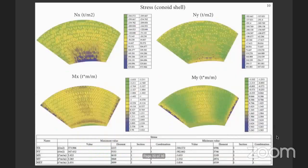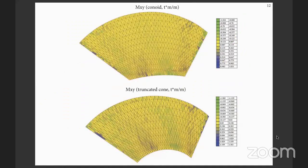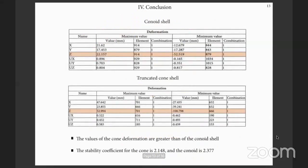Here are the values of the conoid shell, and these are the values for the truncated cone shell. A mixed wire result for the conoid and truncated cone shells is also shown. The values of the cone displacements are greater than those of the conoid shell. The stability coefficient for the cone is 2.148 and for the conoid is 2.377.